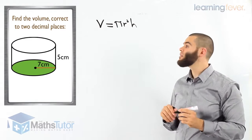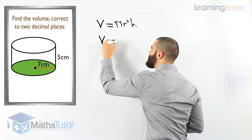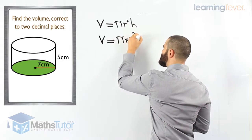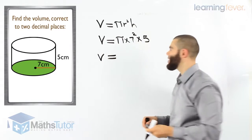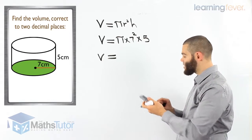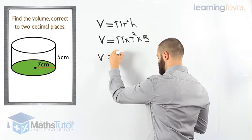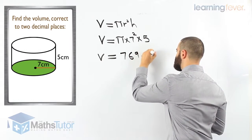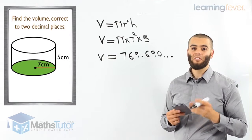Pi times radius squared times the height of the cylinder. We substitute the information: pi times radius 7, squared, times the height of the cylinder which is 5. Grab your calculator and let's do this together. Pi times 7 squared times 5. The volume is 769.690, and it continues on.